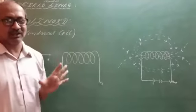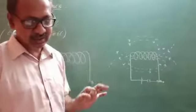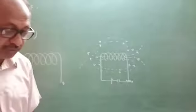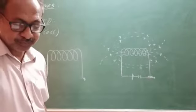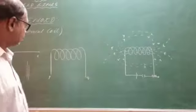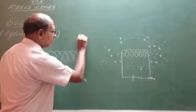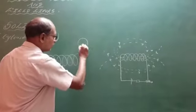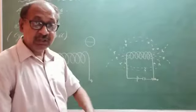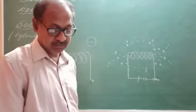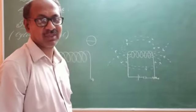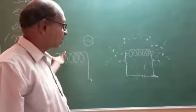So that is what we term as a solenoid, or we can call it a cylindrical coil. What is the meaning of solenoid? A solenoid is a conducting wire wound in the form of a cylindrical coil whose diameter is less compared to its length. So that is what we term as a solenoid.